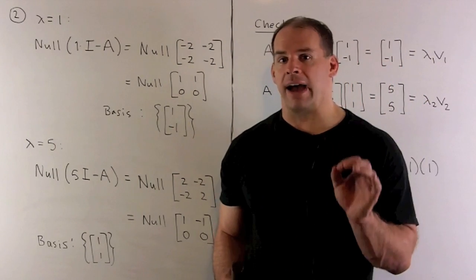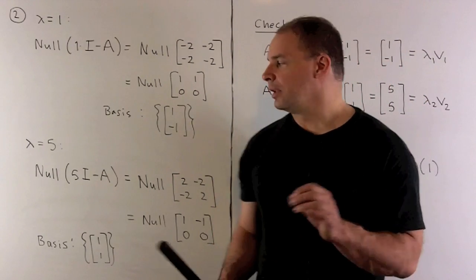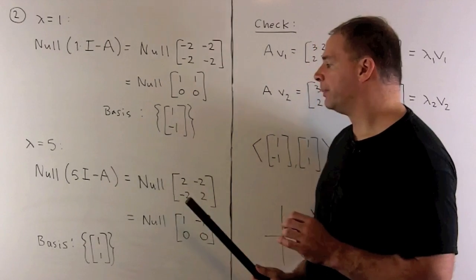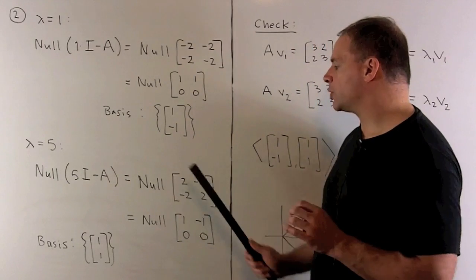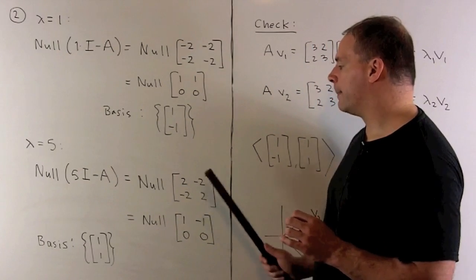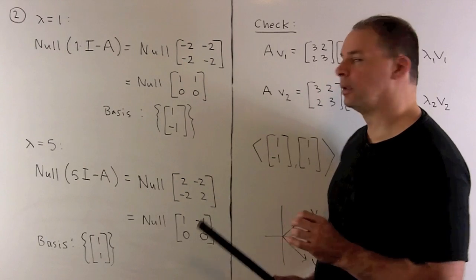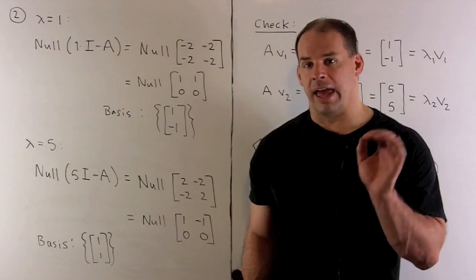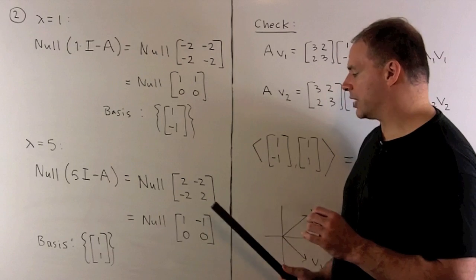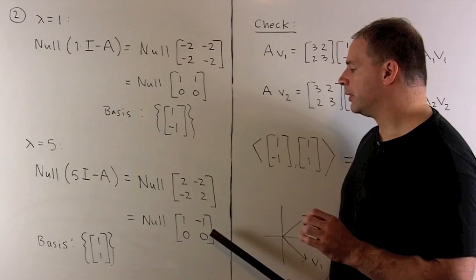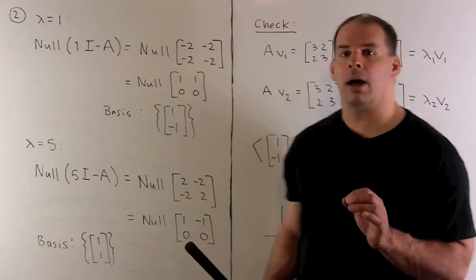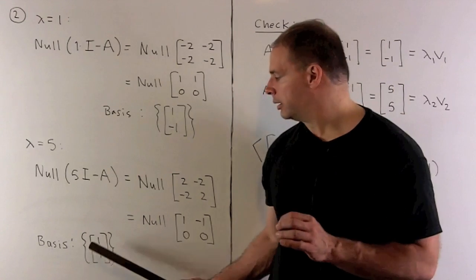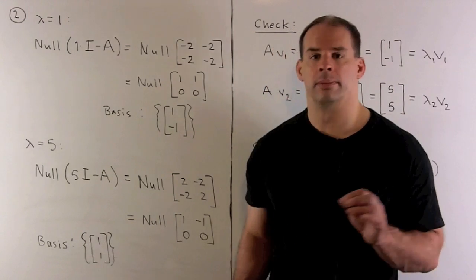For lambda equal to five, we look for the null space of five I minus A, which is the null space of the matrix two, minus two, minus two, two. Row reducing gives one, minus one, zero, zero. A basis for that null space is the vector [1, 1].